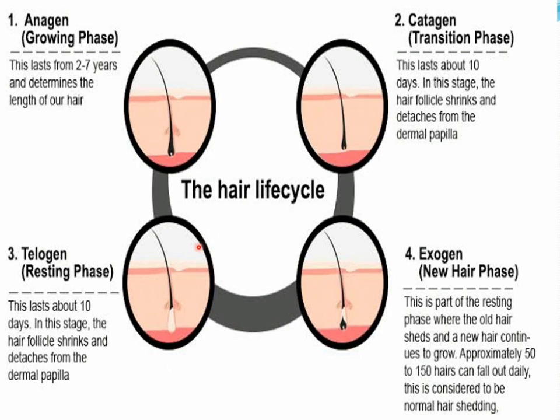This is the pictorial representation of the same thing. As you can see in this diagram, whatever hair that is falling is again regrowing. Now the main question is: when the hair that is falling is regrowing, why does baldness occur?